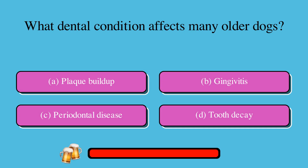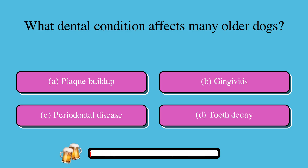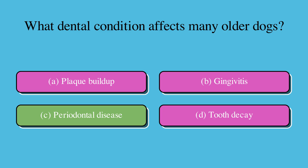What dental condition affects many older dogs? A. Plaque buildup, B. Gingivitis, C. Periodontal disease, or D. Tooth decay. The correct answer is C. Periodontal disease.